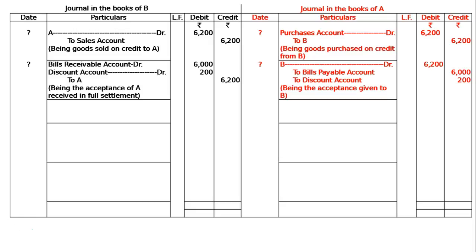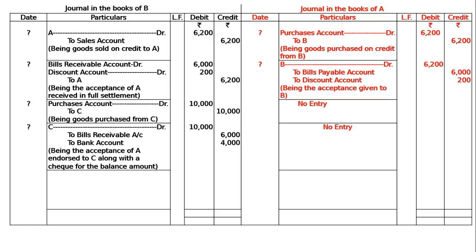B purchased goods worth Rs. 10,000 from C. In the books of B: purchases account debited Rs. 10,000 to C Rs. 10,000, being goods purchased from C. Then B endorses the bill received from A to C, and the balance was given by cheque. The entry in the books of B is: C debited Rs. 10,000, to bills receivable account Rs. 6000, to bank account Rs. 4000, being the acceptance of A endorsed to C along with cheque for the balance amount.